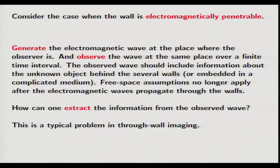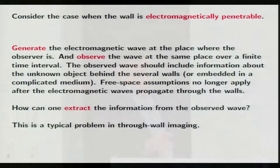Since the wall has a complicated structure, the free space assumption — that a wave goes straight — no longer applies after the electromagnetic wave propagates through the walls. So how can one extract information from the observed wave? This is a typical problem in through-wall imaging, where we observe a very complicated structure and an embedded unknown object.